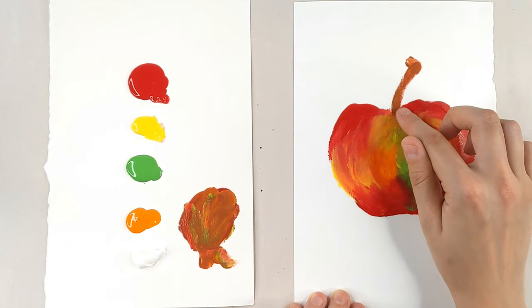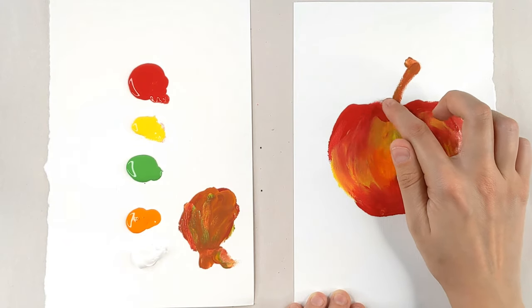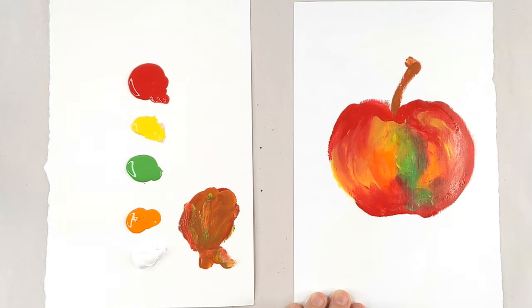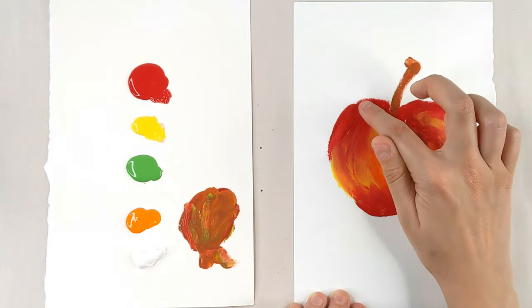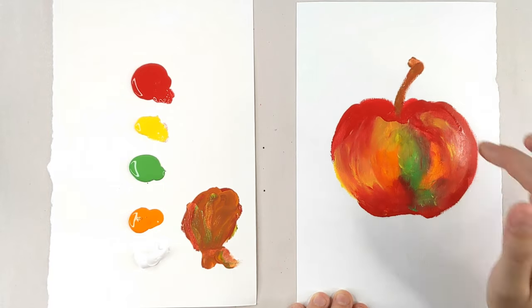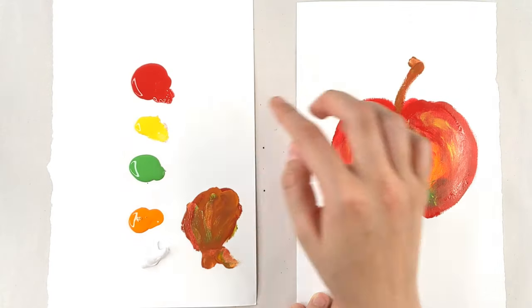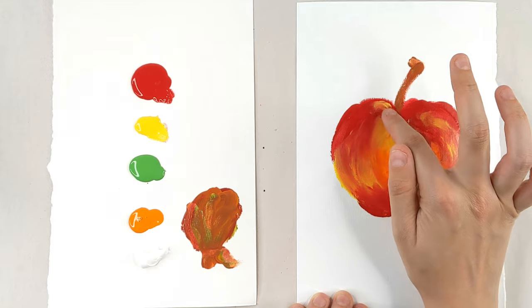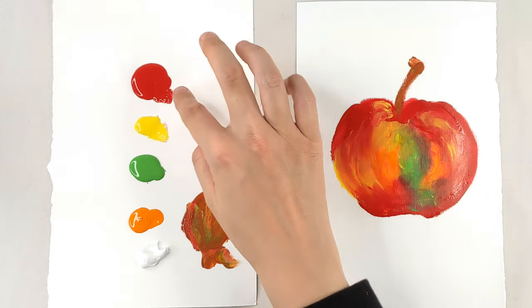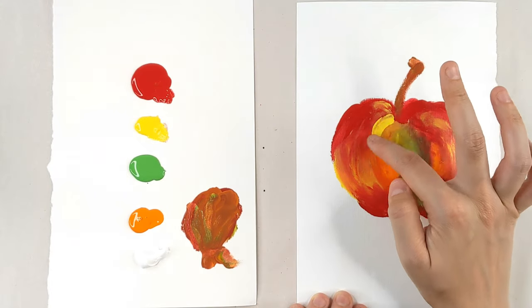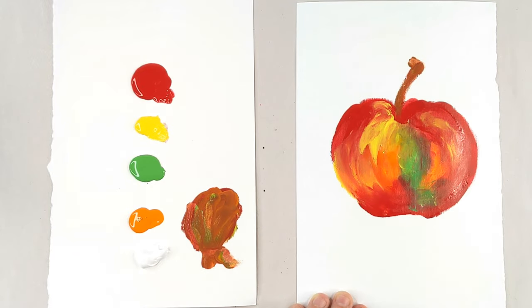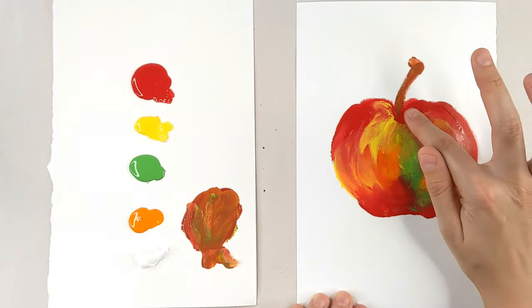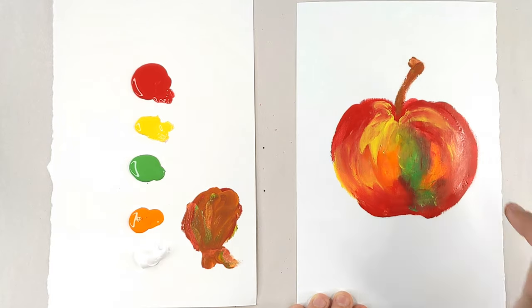I'm going to dip into the red, just go around that little stem area. Just blend it together so it doesn't look quite so harsh. Throw a little bit of yellow so it looks like it goes in. So we have that variation like so.